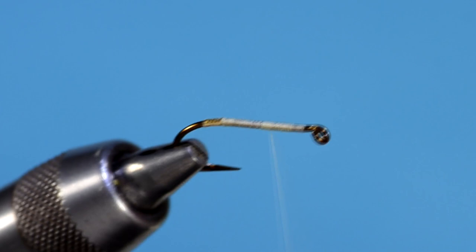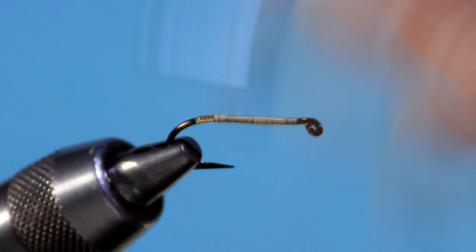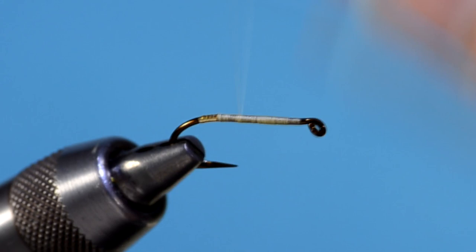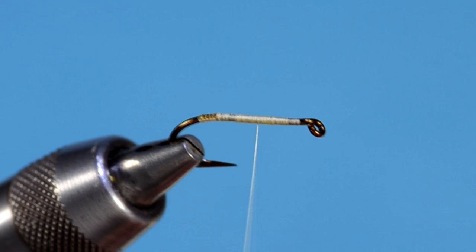You'll see me spin the bobbin here periodically, counterclockwise, like unscrewing a light bulb. The idea there is to flatten the thread. The flatter your thread is, the smoother your underbody will be.